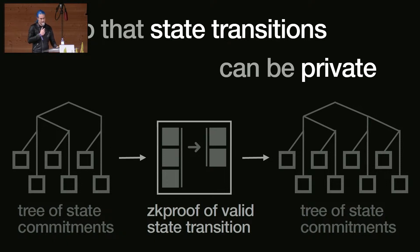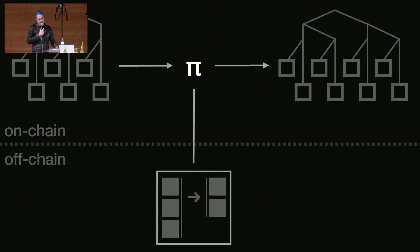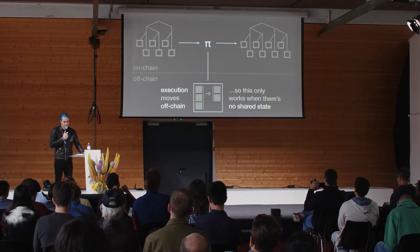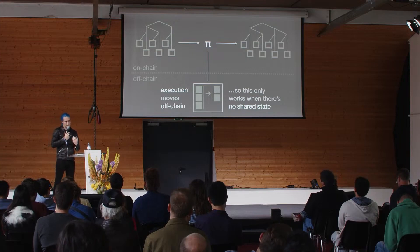But that diagram is a little bit of a lie. What's actually happened is we've successfully moved all user state off-chain and replaced it with commitments, and the only on-chain thing is a proof π. That means execution has moved off-chain, and this only works when there's no shared state. If I want to trade on Uniswap, and I'm moving execution off-chain, one of the inputs to my state transition — for which I'm supposed to supply a sealed, verifiable proof — is going to be the state of that AMM. That state changes out from under me, and I can only be touching my own state. I can't interact with anyone else's shared state because I don't know what it is, and making ZK proofs requires knowledge of the complete state transition.